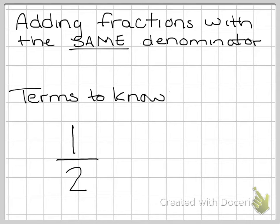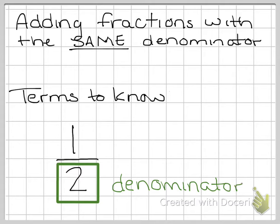So first, what you're going to want to know is what this bottom number, or this 2, is called. This number is called the denominator. The denominator is simply the bottom number that is found in a fraction.